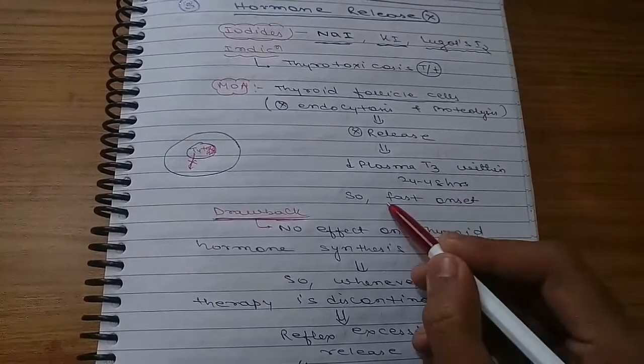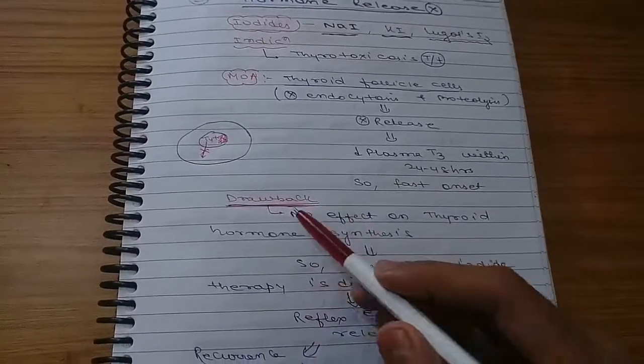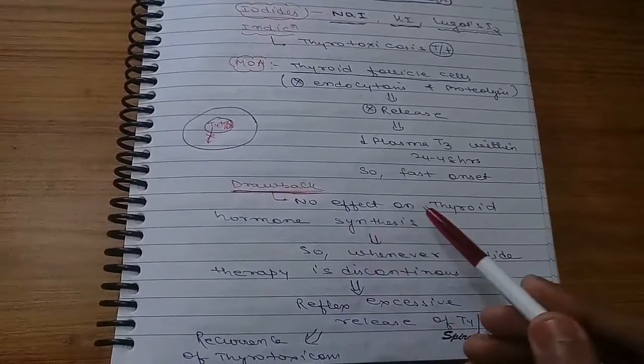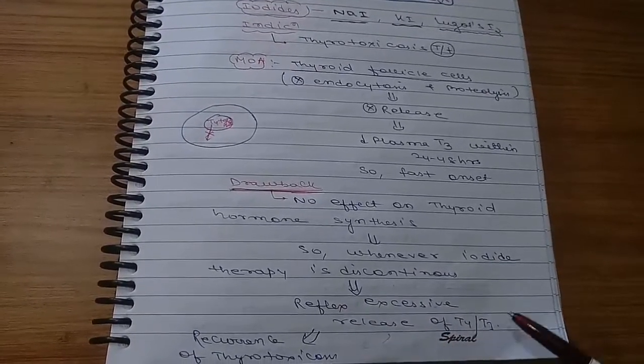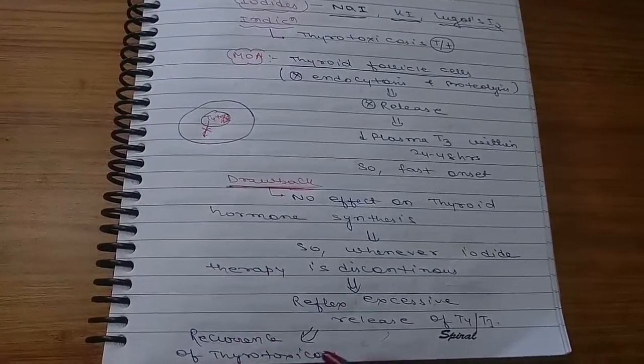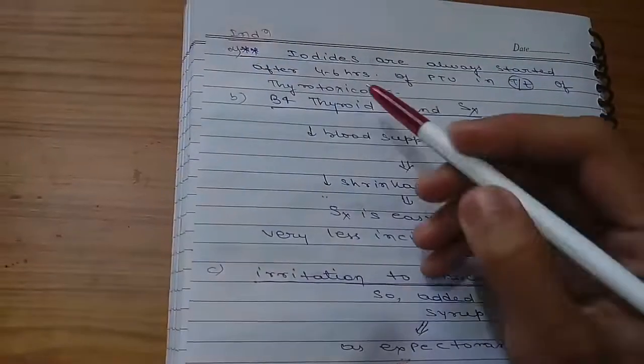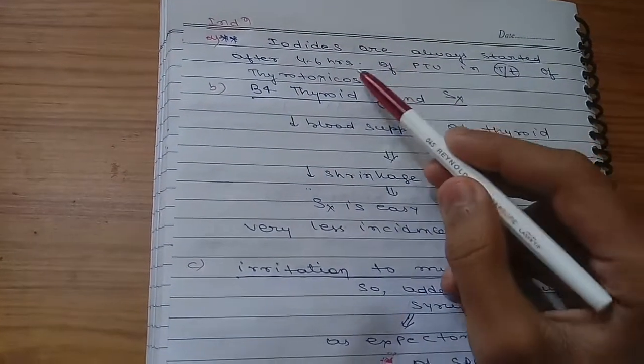It will decrease plasma T3 within 24 to 48 hours, so it has fast onset of action. Drawback: no effect on thyroid hormone synthesis. Whenever iodide therapy is discontinued, there will be excessive release of T4 and T3, so there will be recurrence of thyrotoxicosis.